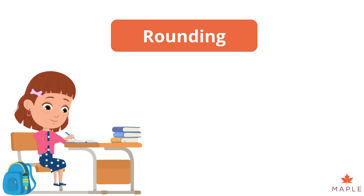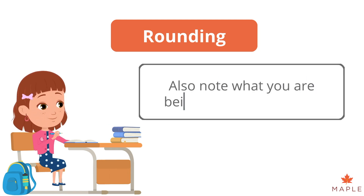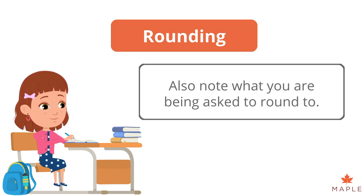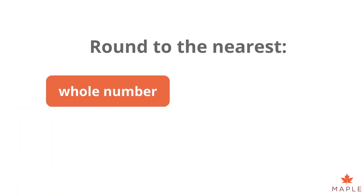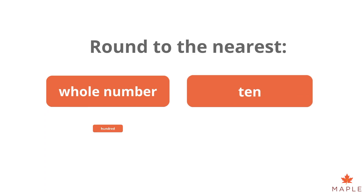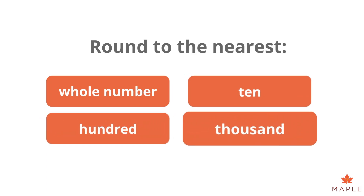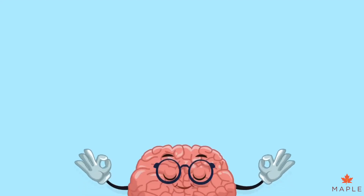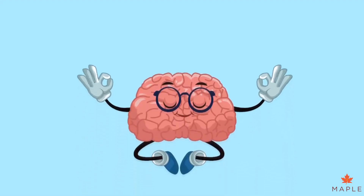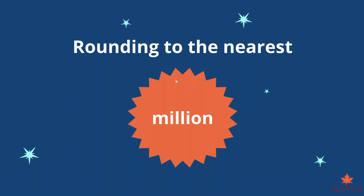When you are asked to round numbers, you should also note what you are being asked to round to. It could be the nearest whole number, the nearest ten, the nearest hundred or the nearest thousand. Sometimes, if you are very smart, you could be asked to round up to the nearest million.